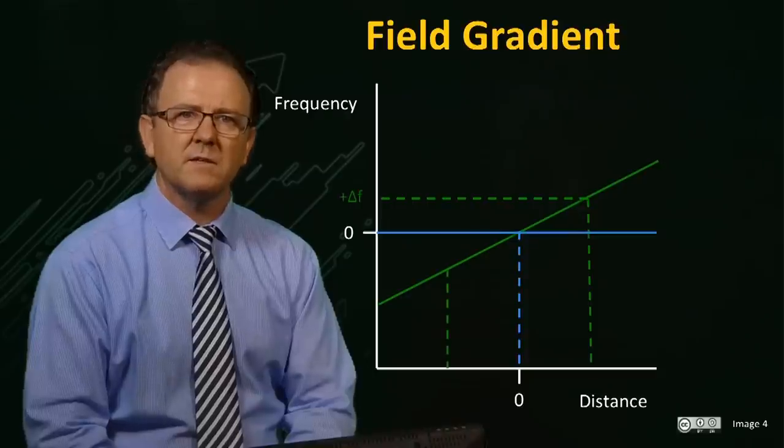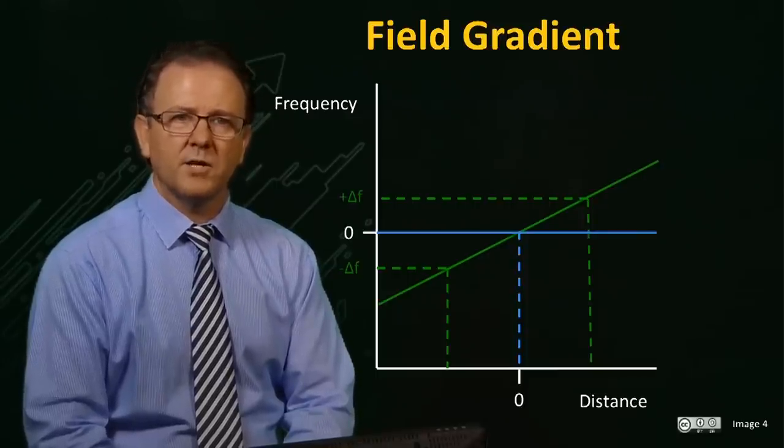In the center, the frequency will not have changed. This linearly changing B0 field is called a field gradient, and is generated in an MRI magnet by applying current through specially designed coils of wire, as we will see in a later section. The linear field gradient generated by these gradient coils adds to the main field B0.